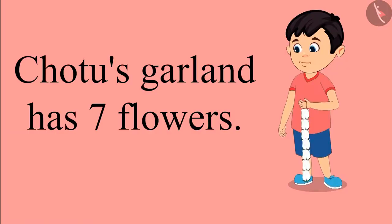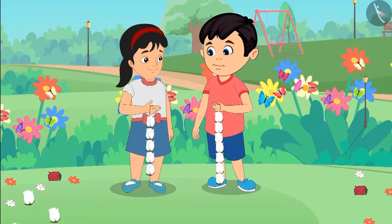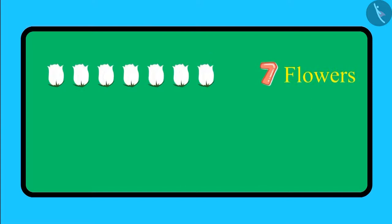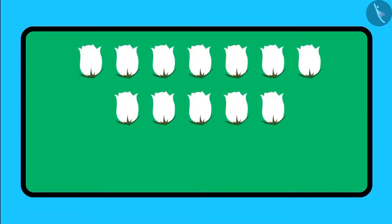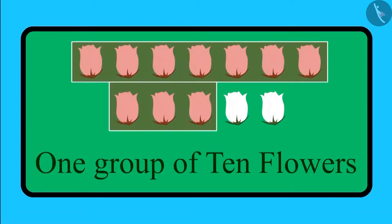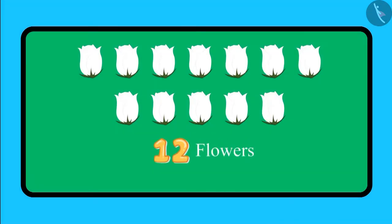Chotu used 7 white flowers to make his garland and Aarti used 5 white flowers in her garland. So children, can you tell us how many white flowers did Chotu and Aarti use in their garlands? Let us see. Chotu added 7 white flowers and Aarti added 5 white flowers. If we look at all the flowers together, we have one group of 10 flowers and 2 more flowers.